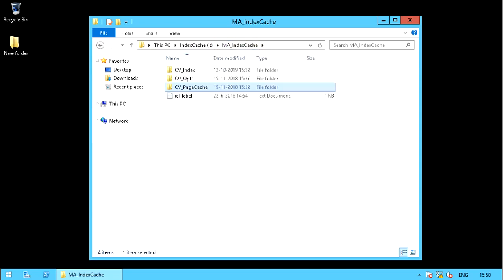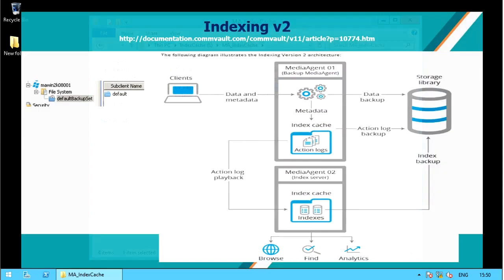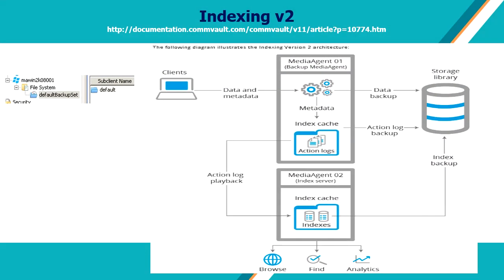Let's check on indexing version 2. Indexing version 2 is the next generation version of the Commvault indexing subsystem. In indexing version 1, the index is created at sub-client level. But in indexing version 2, it is created at backup set level.